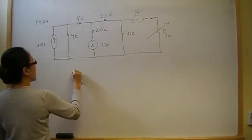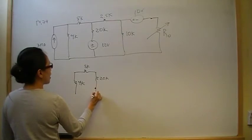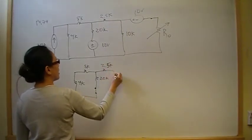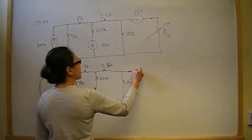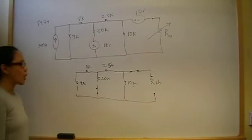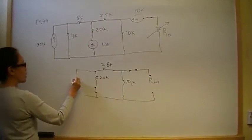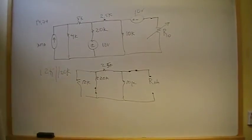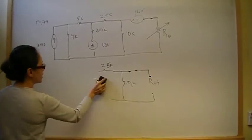Opening the current source leaves us with 4k in series with 8k, and that's in parallel with the 20k. We short out the independent voltage sources. This gives us 2.5k and 10k in that branch, and we short that 10-volt source and open the load. Clearly 4k plus 8k is 12 kilohms. So we have 12k in parallel with 20k, which gives you 7.5k.